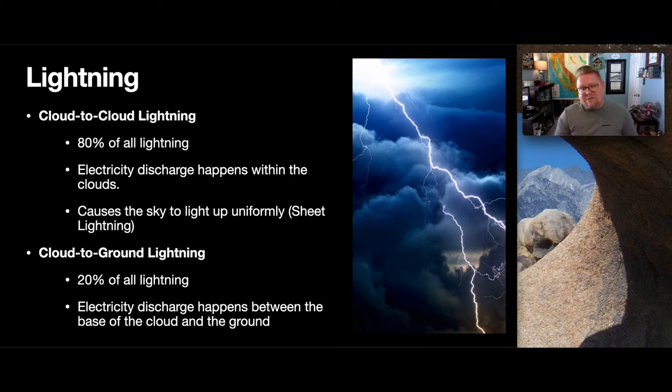Cloud-to-ground lightning is more of what we like to see when it crashes on the ground. You can see the lightning bolt come down. That only makes up about 20% of all the lightning that occurs. But electricity is discharged, and it happens between the base of the cloud and the surface of the ground itself. And that's when we get to see a very unique lightning show as it flashes down, as it appears from the cloud. As we'll learn, it actually doesn't flash down, but you'll see what that means.